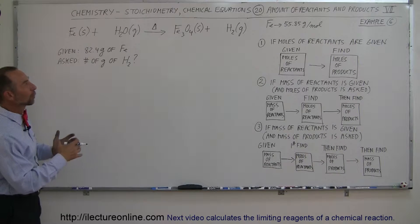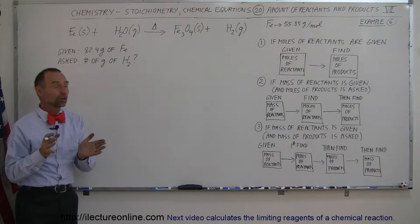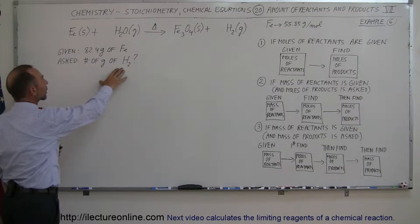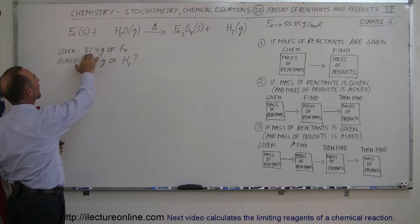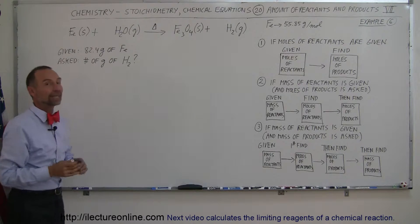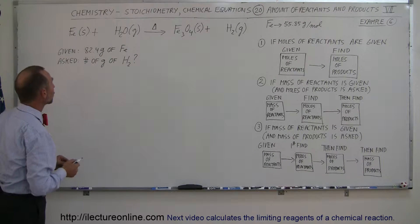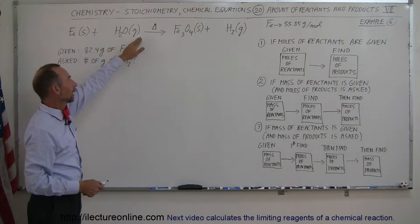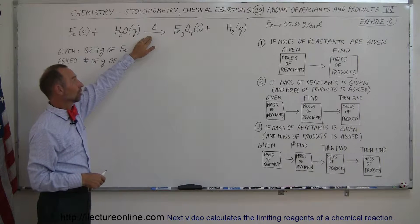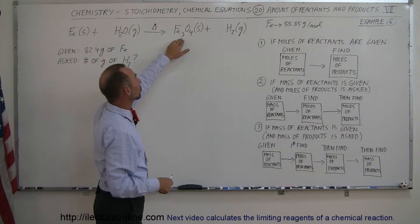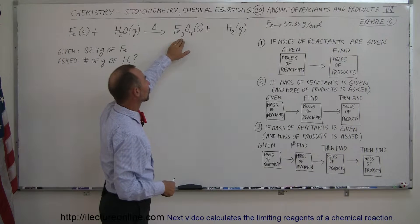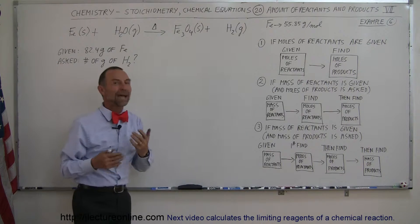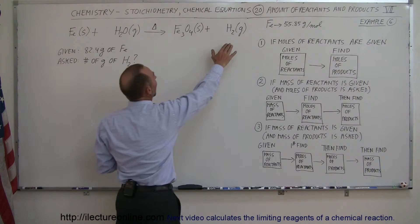Here's our next example of how to work with chemical equations. We're looking to find the number of grams of the product hydrogen gas we end up with when we start with 82.4 grams of the reactant iron. We're taking solid iron and adding steam at elevated temperature to produce ferrous ferric oxide, also known as magnetite, and hydrogen gas.